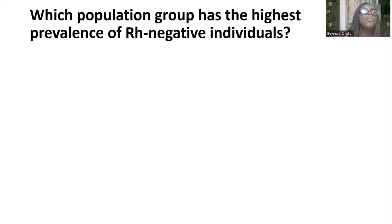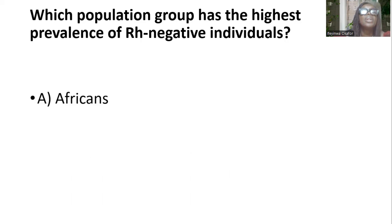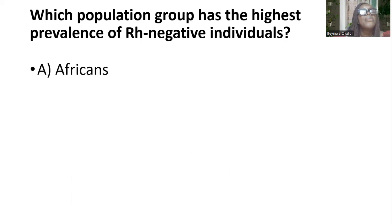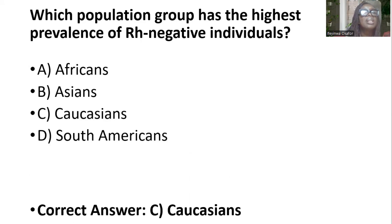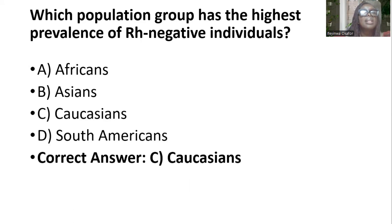Which population group has the highest prevalence of RH-negative individuals? Options are Africans, Asians, Caucasians, and South Americans. And the answer is C — Caucasians.